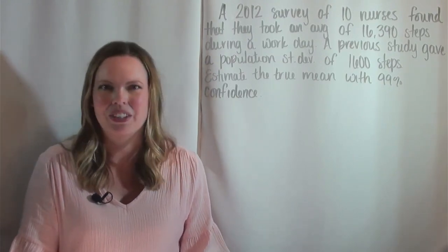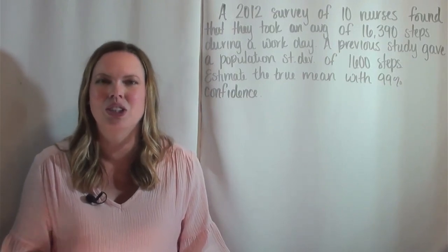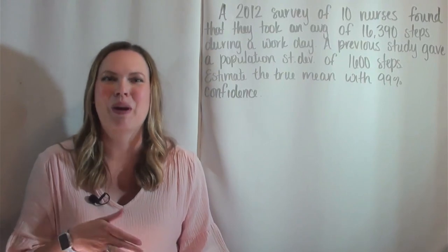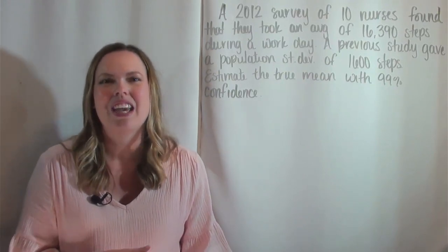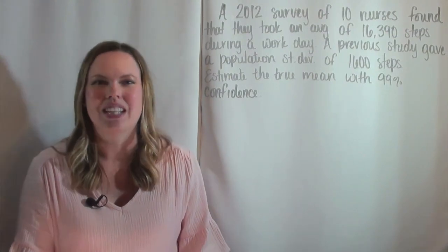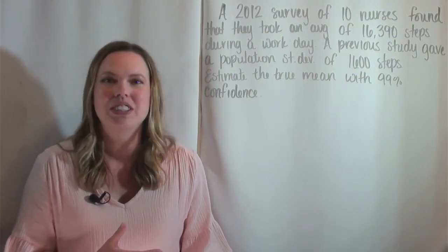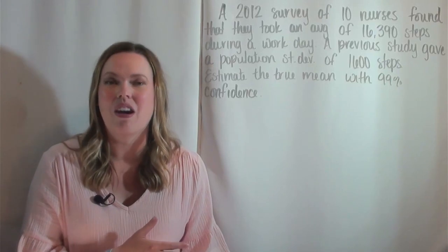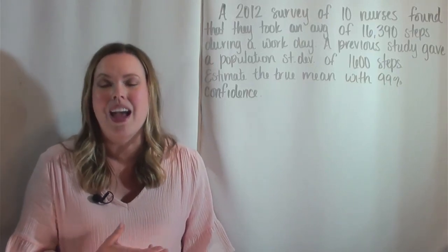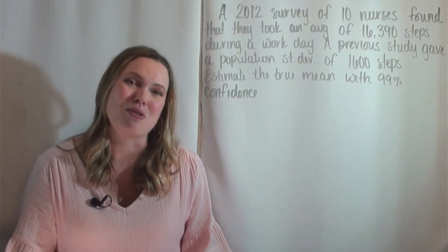Now this is not very practical. There are not many times where we are trying to estimate mu and we know the population standard deviation. Usually we need the mean to find that population standard deviation. But this is helpful to kind of walk through confidence intervals building on something that we know, and it usually is building on the central limit theorem.